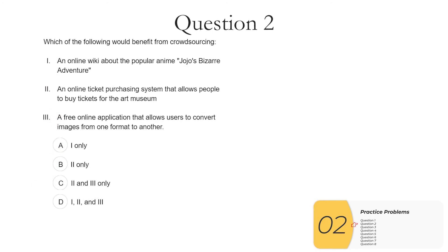Question two, which of the following would benefit from crowdsourcing? One, an online wiki. Online wikis like Wikipedia are classic examples of crowdsourcing. This one is definitely true. Two, an online ticket purchasing system. So this one might be a little bit tricky.